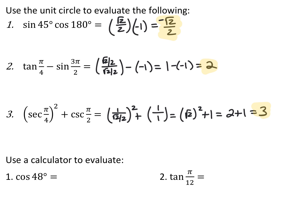A calculator can also evaluate trig functions using the sine, cosine, and tangent buttons on scientific or graphing calculators. Be careful to be in the correct mode — degree mode or radian mode. On graphing calculators go to mode to switch; on scientific calculators use the DRG button. For cosine of 48 degrees (degree mode) you get 0.669. For tangent of pi over 12 (radian mode) you get 0.267.